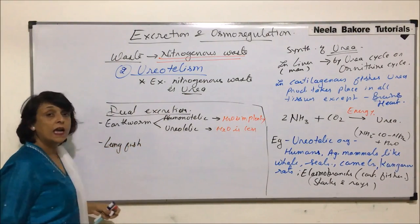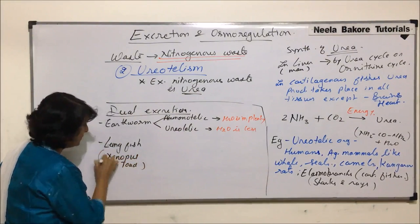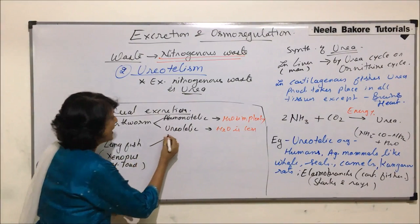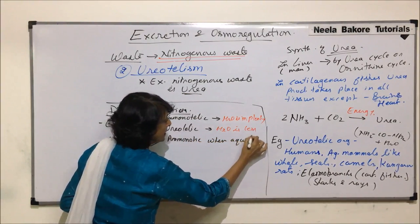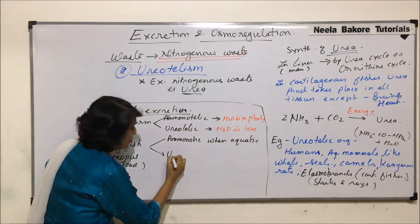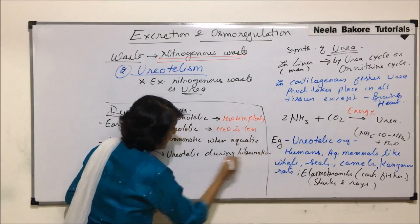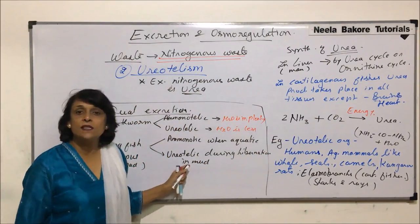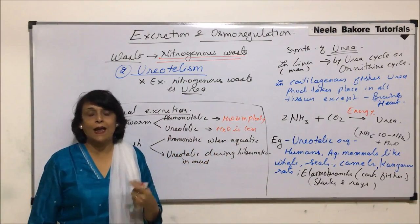Another example is the lungfish and the African toad, Xenopus. They are ammonotelic when they are in water — that is, when leading an aquatic mode of life. They become ureotelic when they undergo hibernation in mud. So when water is less and the surroundings become muddy, they start excreting urea, but when aquatic and water is sufficient, they act as ammonotelic organisms.